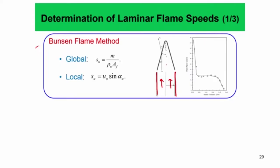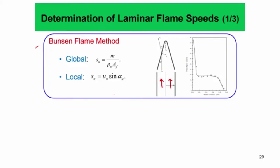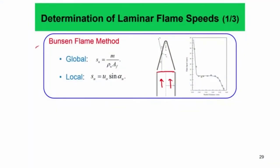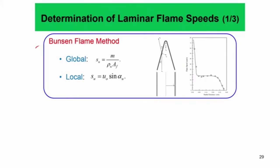Consider this as a planar slot jet which is two-dimensional — infinitely thick into and out of the board. We can estimate the global flame speed by measuring the total mass flow rate coming through the tube from, say, the mass flow controller readings. Knowing the density of the unburned mixture from temperature and pressure, and the cross-sectional area — for a cylindrical tube it is just π r² — using ṁ divided by ρ_u times A_f, you can find out the average flame speed.